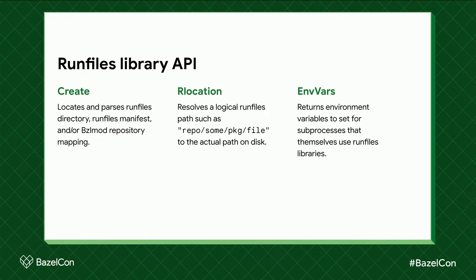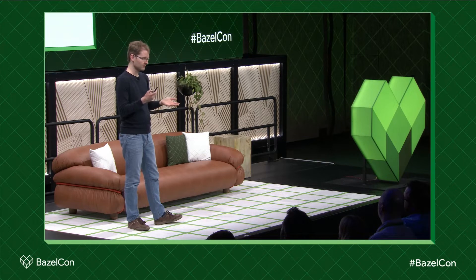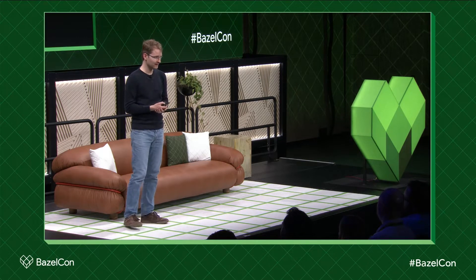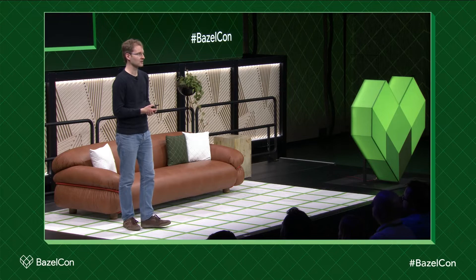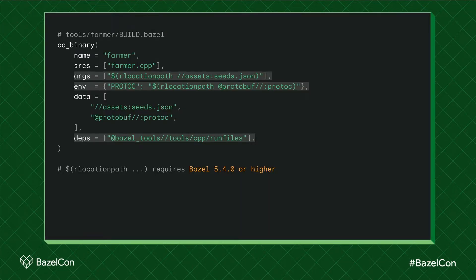And run files libraries in these subprocesses will be able to find run files as well. Now that we see what this looks like, let's actually look at an example. And here's the thing: BazelMod is a new feature, so some of the APIs are only available in Bazel 6. So in all these code samples I'll always point out what's supported in which version of Bazel.